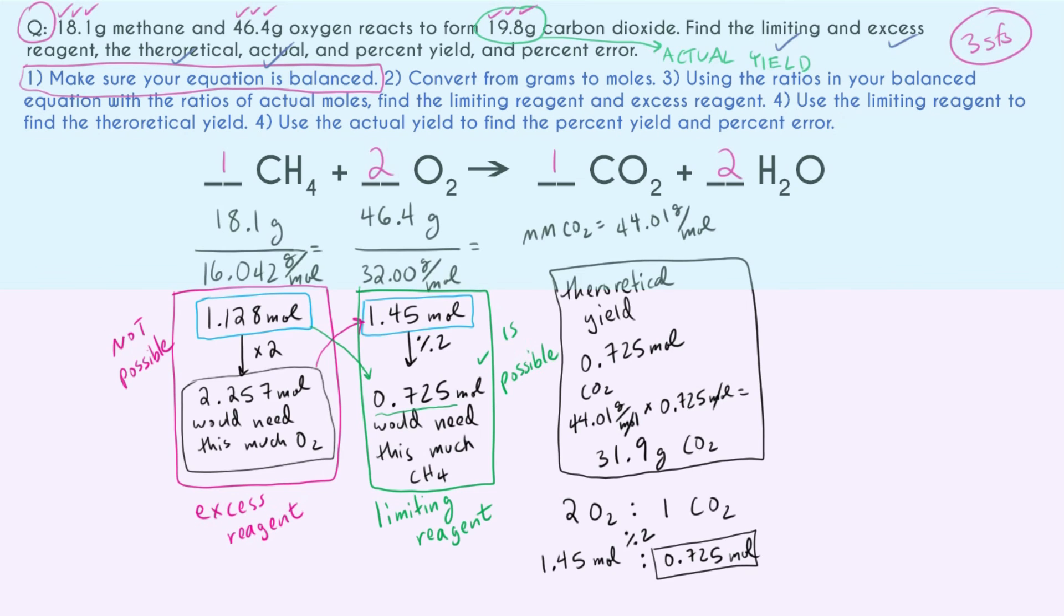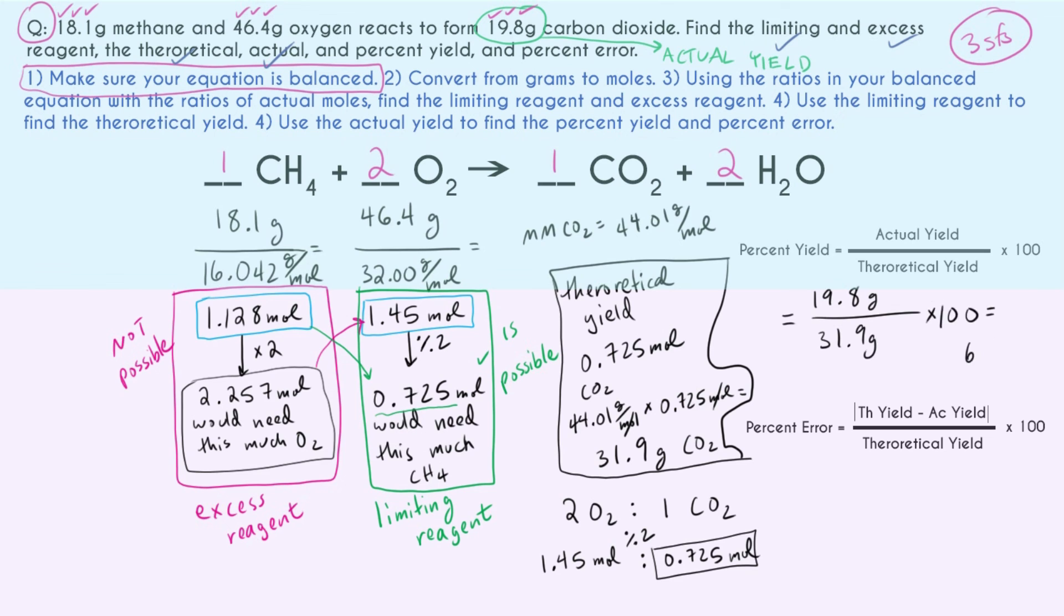So for percent yield and percent error, these are just math equations that we can look up the definition to. So first, our percent yield is just going to be our actual yield divided by our theoretical yield times 100. So plugging in for that, remembering that our actual yield just comes from our problem, using three sig figs still, we just get that our percent yield is 62.1 percent. So not great, not the worst in the world.